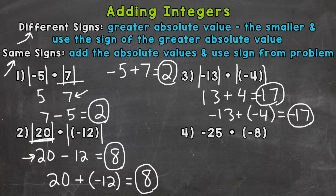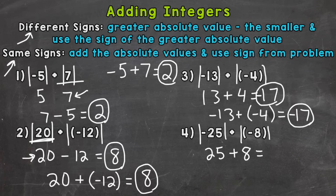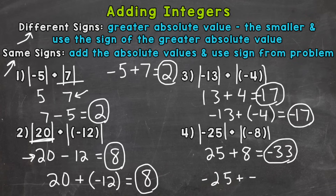And lastly, number four: we have negative 25 plus a negative 8. Same signs again, so we need to add the absolute values. Negative 25 has an absolute value of 25, and negative 8 has an absolute value of 8. Add those and we get 33. We use the same sign from the problem — both are negative — so our answer is negative 33. Using mental math, same idea as number three: we are starting at negative 25 and adding a negative 8, so we are decreasing in value, going further left on the number line, and we end up at negative 33.